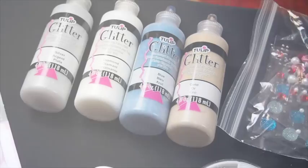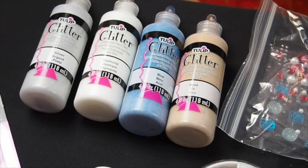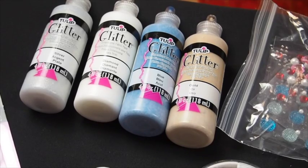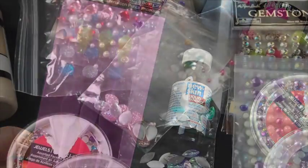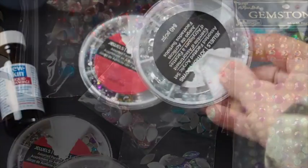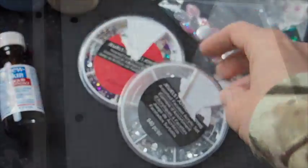To make the tiaras you'll need tulip dimensional fabric paint in silver glitter or gold glitter, wax-tipped wands for placing gems, large focal gems, smaller gems to complement the design, and plastic page protectors with graph paper.